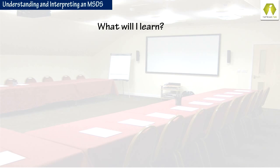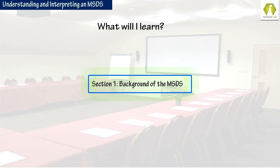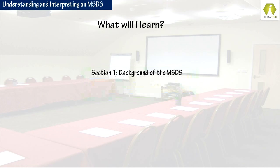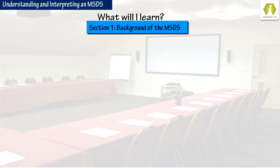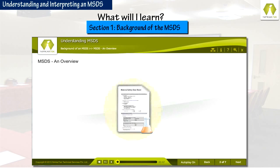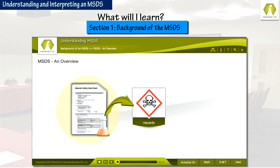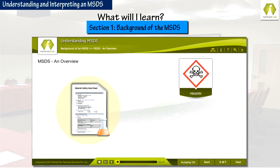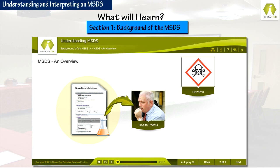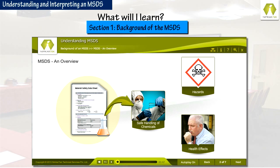This course will take you through the following sections. Section 1 of the module gives an introduction to MSDS, their background, purpose, and scope. An MSDS is a document that communicates information on hazards of a chemical substance or preparation, potential health effects on exposure to a chemical, and safe handling of chemicals. This is the purpose of an MSDS.